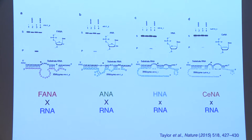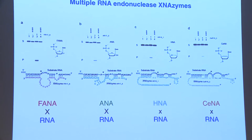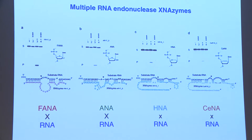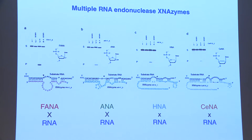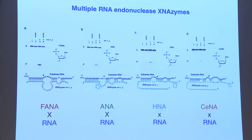Once we managed to do it for FANA, we managed to do it in a whole range of other XNAs with slightly different properties. But this is still catalysis where the substrate is natural — you could argue the catalytic function is at least partially encoded by the substrate, since substrate-assisted catalysis is common in many enzymes. So can we make a completely synthetic catalyst?